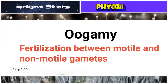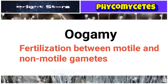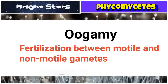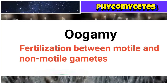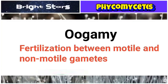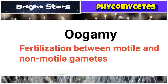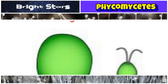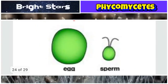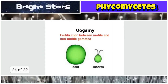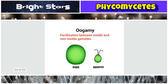Oogamy: the word comes from ovum, meaning egg. If fertilization takes place between an egg and a sperm — that is, between a non-motile and a motile gamete — it is called oogamy. Here you can see egg and sperm-like cells; fertilization between the ovum (egg) and a sperm-like cell is called oogamy. These are the important terms studied under Phycomycetes.